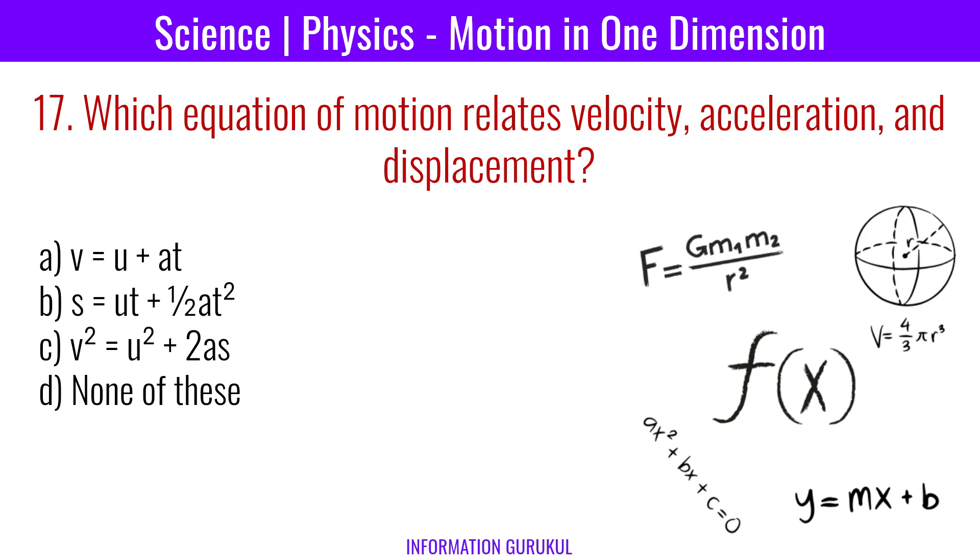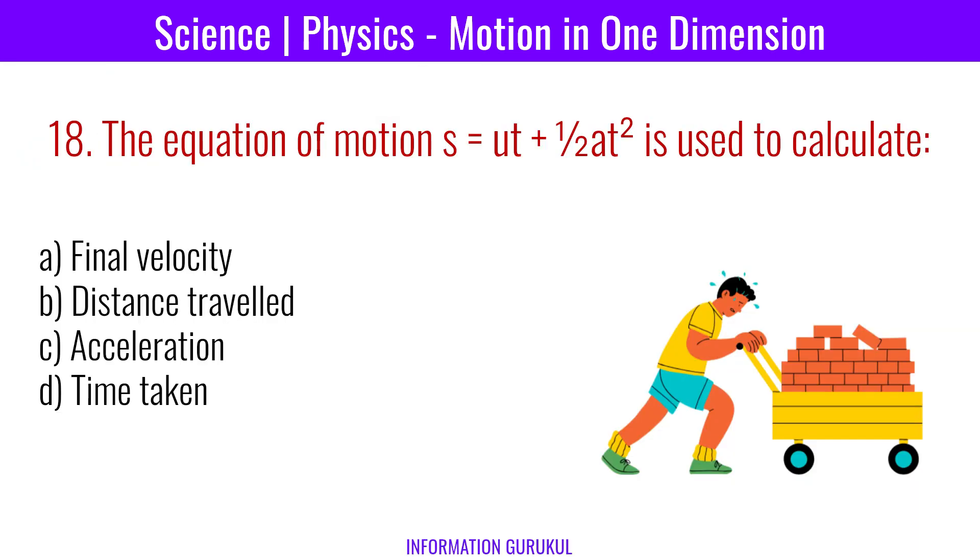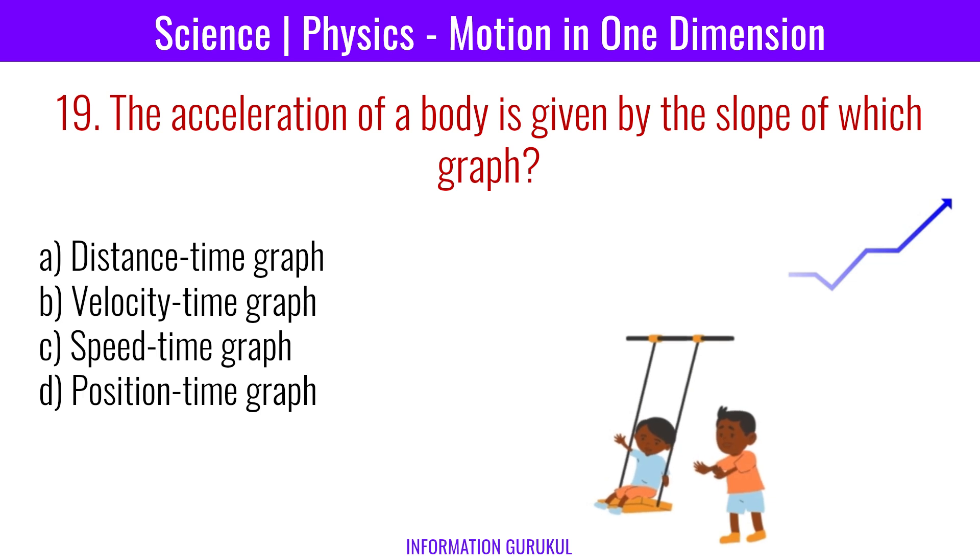V squared equals u squared plus 2as. The equation of motion s equals ut plus half at squared is used to calculate distance traveled. The acceleration of a body is given by the slope of which graph? Velocity-time graph.